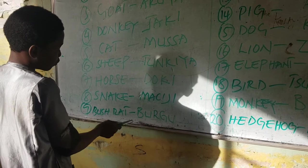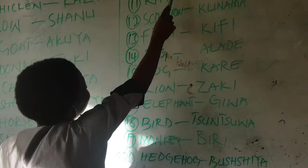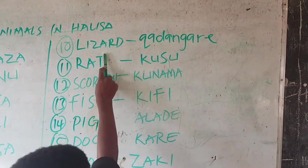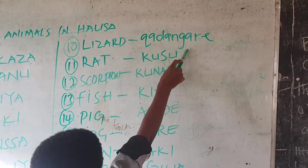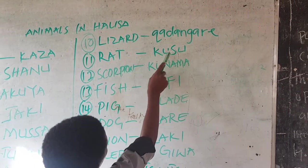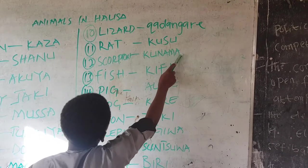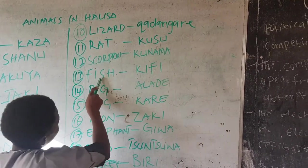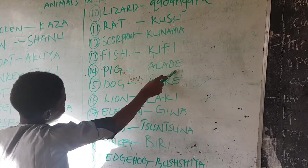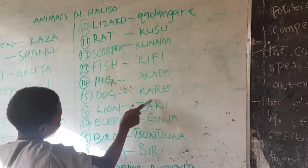Bushrat, burgu. Lizard, kadangari. Rat, kusu. Scorpion, kunama. Fish, kifi. Pig, aladi. Dog, kare.